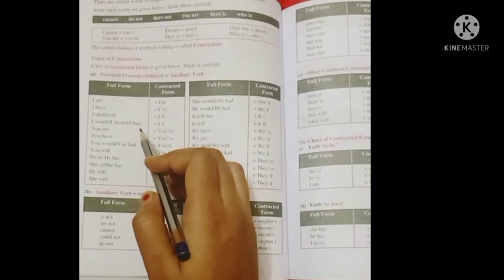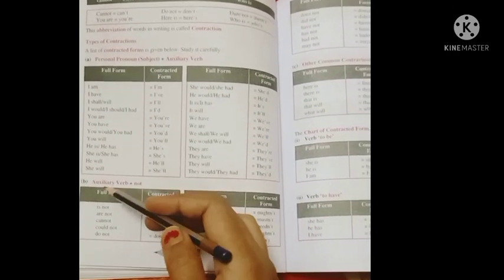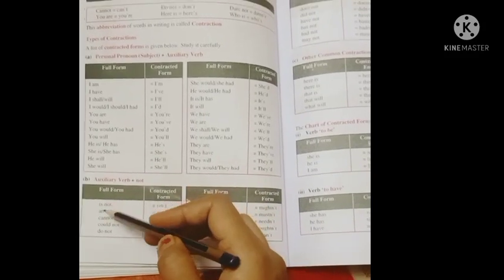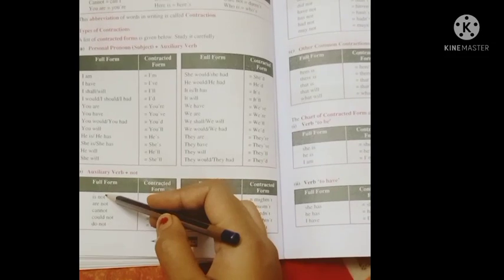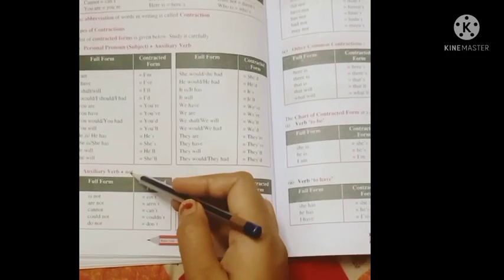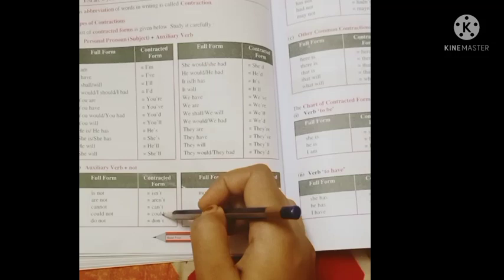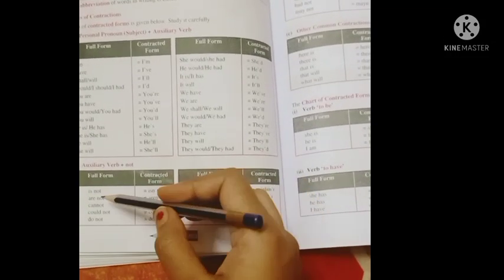Now come to this part B: auxiliary verb plus 'not'. Here we can see these are auxiliary verbs and the second form is 'not'. Okay, contracted forms are here. Is not, isn't. Are not, aren't.